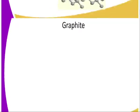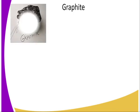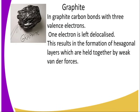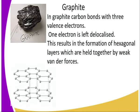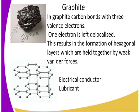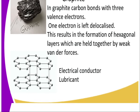Diamond is the hardest naturally occurring substance. On the other hand, in graphite, carbon bonds with three valence electrons, so one electron is left delocalized. This results in the formation of hexagonal layers, which are held together by weak van der Waals forces. Since the layers are held by weak van der Waals forces, they can slip over one another, making graphite a lubricant, especially in parts where a lot of heat is generated, because it has a very high melting point. The one delocalized electron makes graphite a good conductor of electricity.